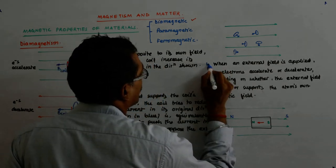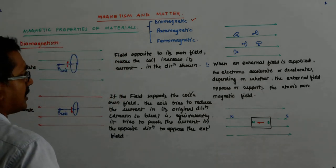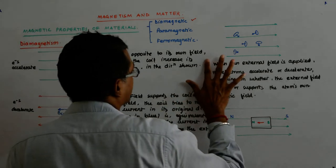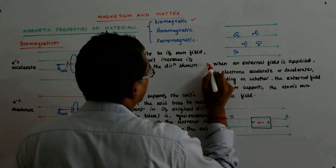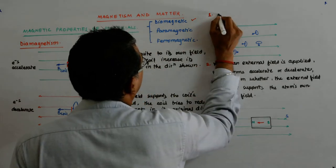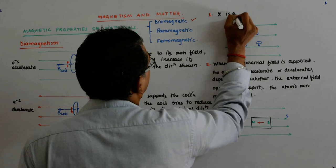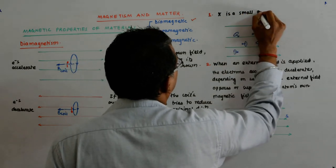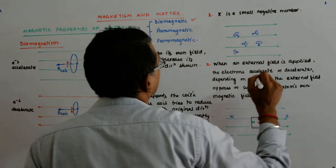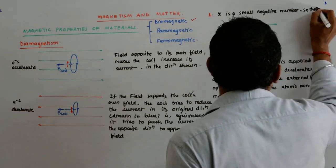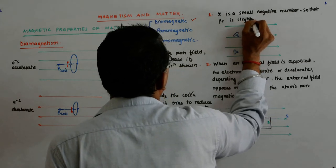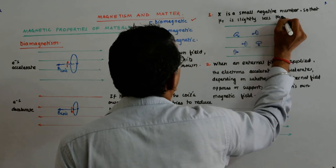So this is property number two. What's property number one? Property number one is what you have already observed: here chi is a small negative number, so that mu_r is slightly less than one.